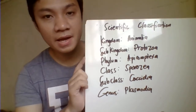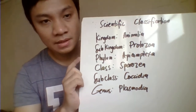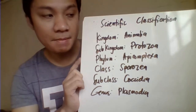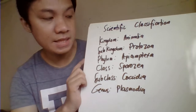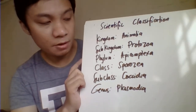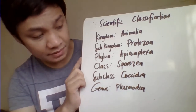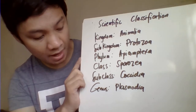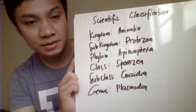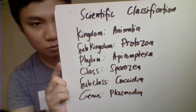The scientific classification of Plasmodium: Kingdom Animalia, Sub-kingdom Protozoa, Phylum Apicomplexa, Class Sporozoa, Subclass Coccidia, and Genus Plasmodium.